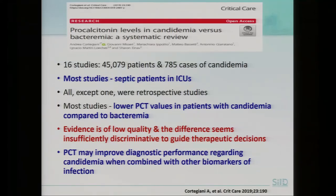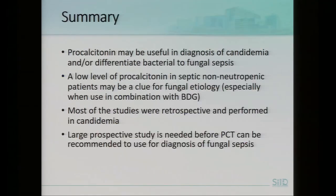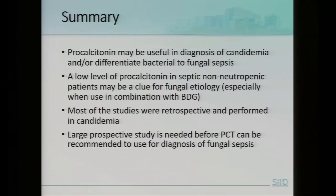In conclusion, procalcitonin may improve diagnostic performance for candidemia when combined with other fungal biomarkers like beta-D-glucan, but further study is still needed. In summary, procalcitonin may be used to diagnose candidemia or to differentiate bacterial from fungal sepsis. A low level of procalcitonin in septic non-neutropenic patients may point to a fungal etiology, especially when combined with a high beta-D-glucan. Most studies are retrospective, only one or two are prospective, and they were performed mainly in candidemia rather than other forms of invasive candidiasis. We need a large prospective study before procalcitonin can be recommended for the diagnosis of fungal sepsis. Thank you very much.